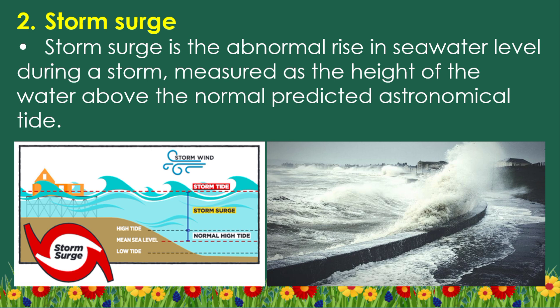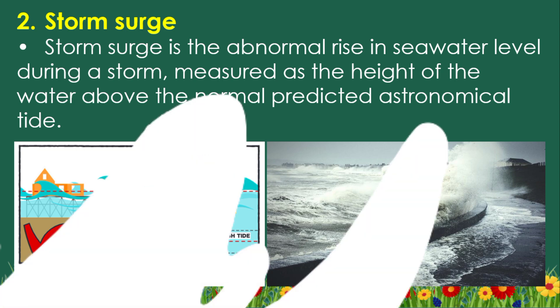Type 2: Storm Surge. Storm surge is the abnormal rise in seawater level during a storm, measured as the height of the water above the normal predicted astronomical tide.